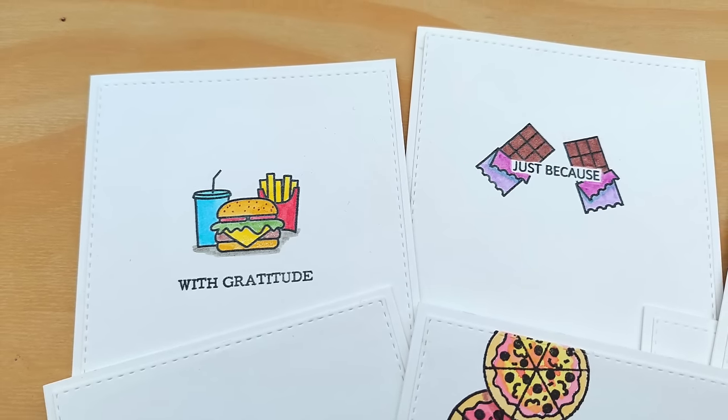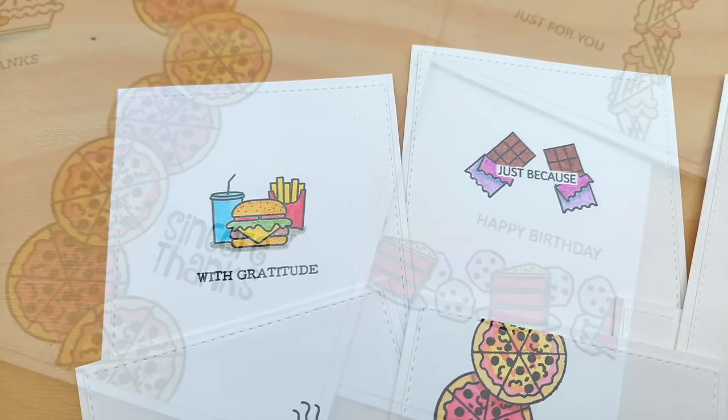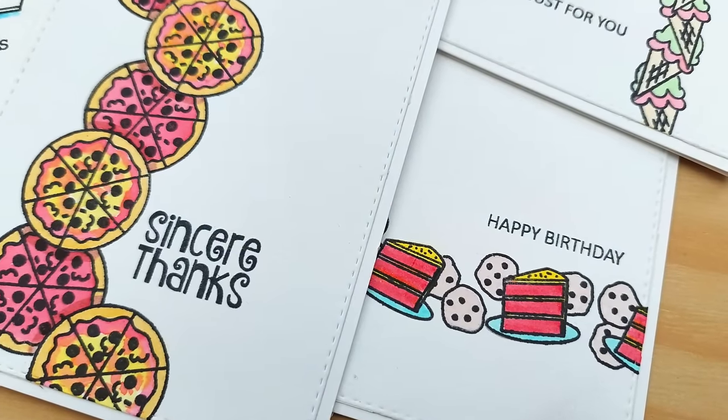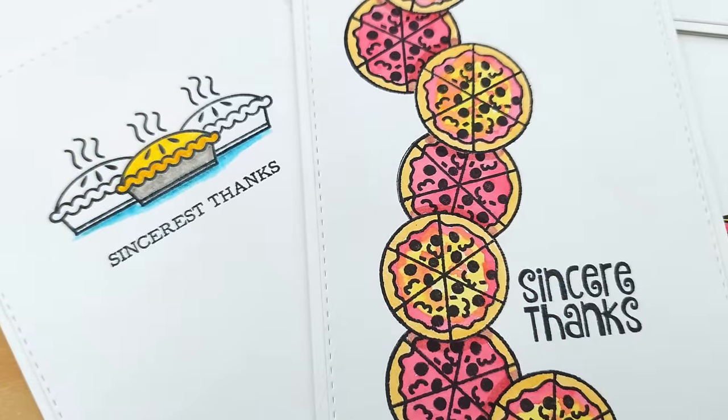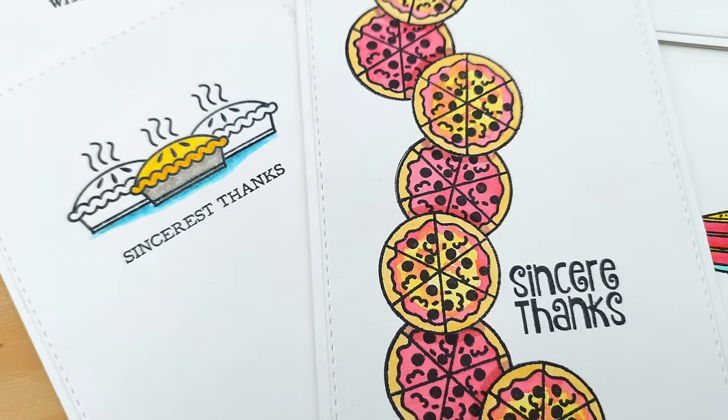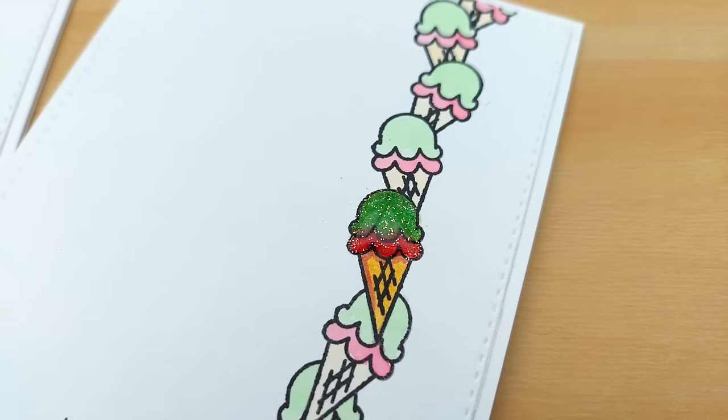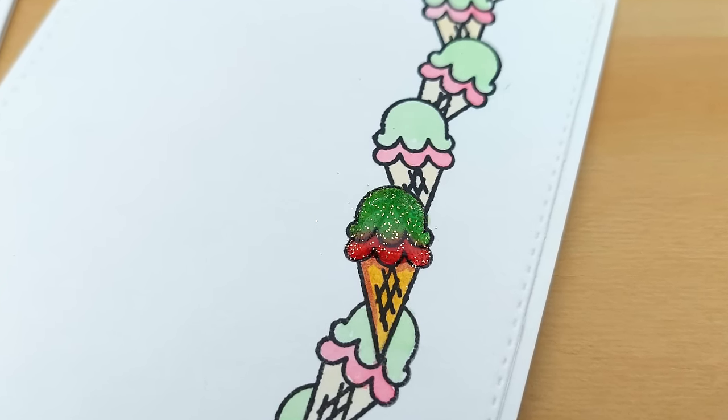That brings us to the end of this Stamping September video. I hope you've enjoyed it and it's given you a few ideas of things you can do with food themed stamps that you may have, and some masking ideas using masking paper. If it has, please do leave a thumbs up, let me know in the comments, subscribe, ring the notification bell, and I'll see you back here very soon for my next video. Thanks for watching. Bye for now.